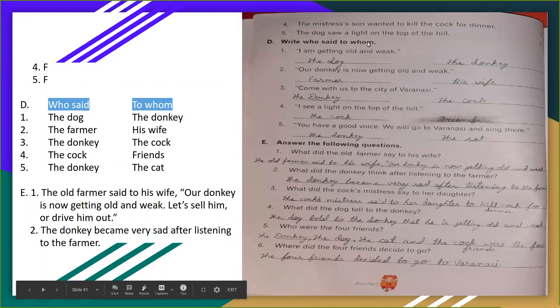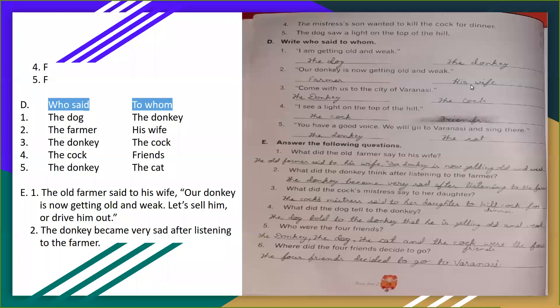D mein, write who said to whom. Kaun kis se bolta hai. Hum log ko yaha par likhna hai ki kaun bolta hai aur kis se bolta hai. First, I am getting old. Main boodhha aur kamzor ho raha hoon. Toh dog bolta hai donkey se. The dog said to the donkey. Second, our donkey is now getting old and weak. The farmer, farmer bolta hai wife se ki hamara donkey old aur boodhha aur kamzor ho raha hai. Third, come with us to the city of Varanasi. Donkey bolta hai, the donkey to the cock.